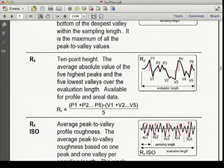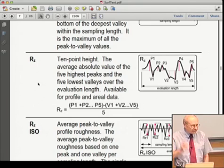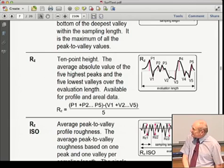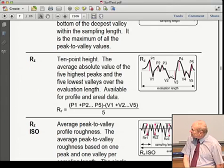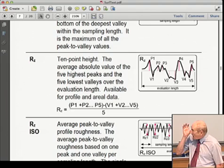Last class I was showing some output from an optical profiler, and there was an output number for R sub Z. I was asked what's the definition of R sub Z, and I couldn't remember. So after class I went to Google, and Google remembered the definition. R sub Z is a 10-point height. We take the average absolute value of the five highest peaks and the five lowest valleys, add the peaks, subtract the valleys, and divide by five.